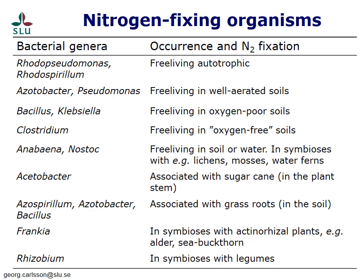There are different types of bacteria that can fix nitrogen. This table lists a few examples of bacteria that have this capacity and shows in which environments the different groups live and fix nitrogen. At the bottom of the table we have two examples of bacteria that can form root nodule symbioses with plants: the Frankia group, which forms symbioses with a diverse group of plants, and the Rhizobium group, which forms symbioses with legumes.